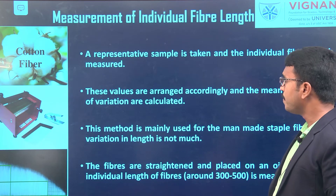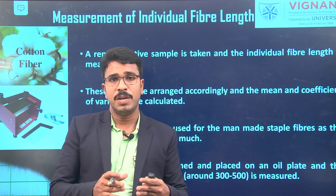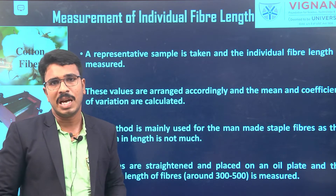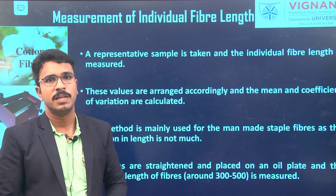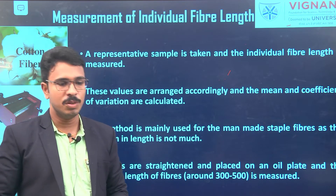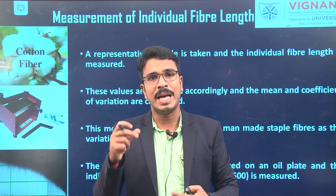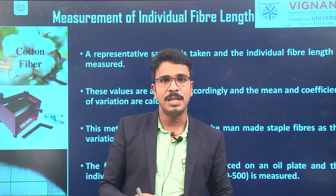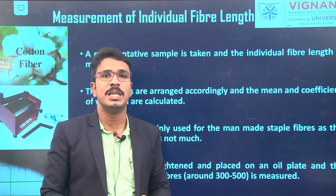Now, regarding measurement: fiber length measurement is very important as it gives us an idea about fiber characteristics and helps set machine parameters in the spinning line. To do this, we need to measure fiber length along with other factors like fiber fineness, fiber maturity, and fiber strength.